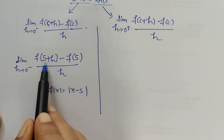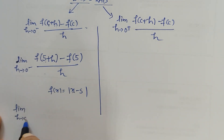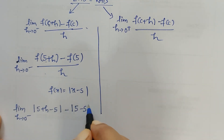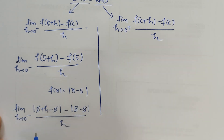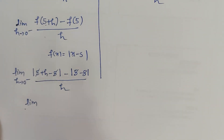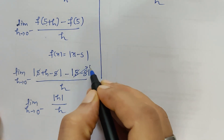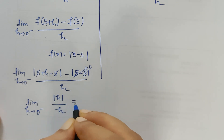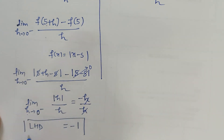Wherever in the bracket we have x, we replace x by 5 plus h, so this becomes limit h tending to 0 minus of |5 + h - 5| minus 5, upon h. The 5 and minus 5 cancel, leaving limit h tending to 0 minus of |h| / h. Since h is tending to 0 minus, h has a negative value, so removing the mod gives minus h upon h, which gives the left hand derivative equal to minus 1.